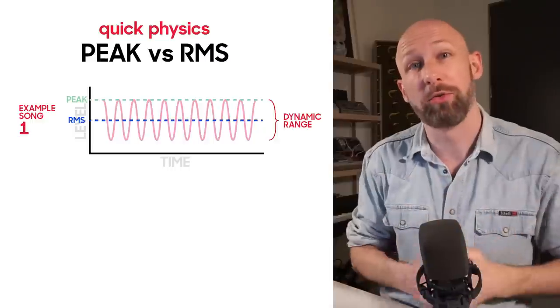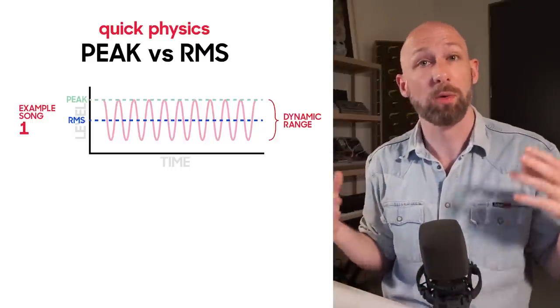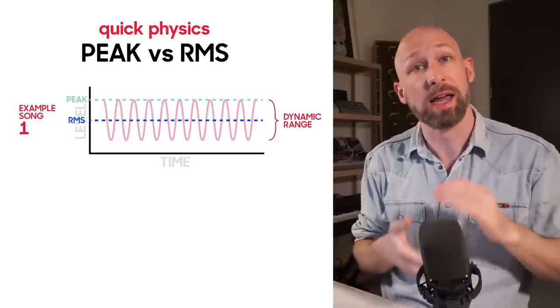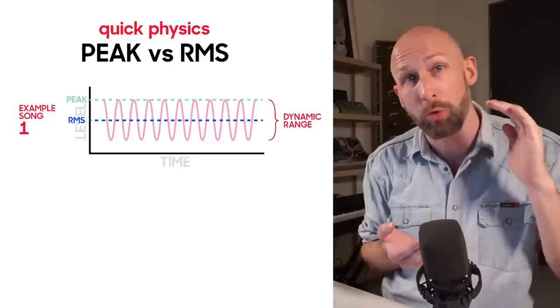The distance between the loudest part of your signal and the quietest part is also referred to as the dynamic range of your signal. So in this first example, we could say that this sound has a large dynamic range. It's a very dynamic or very uncompressed signal.